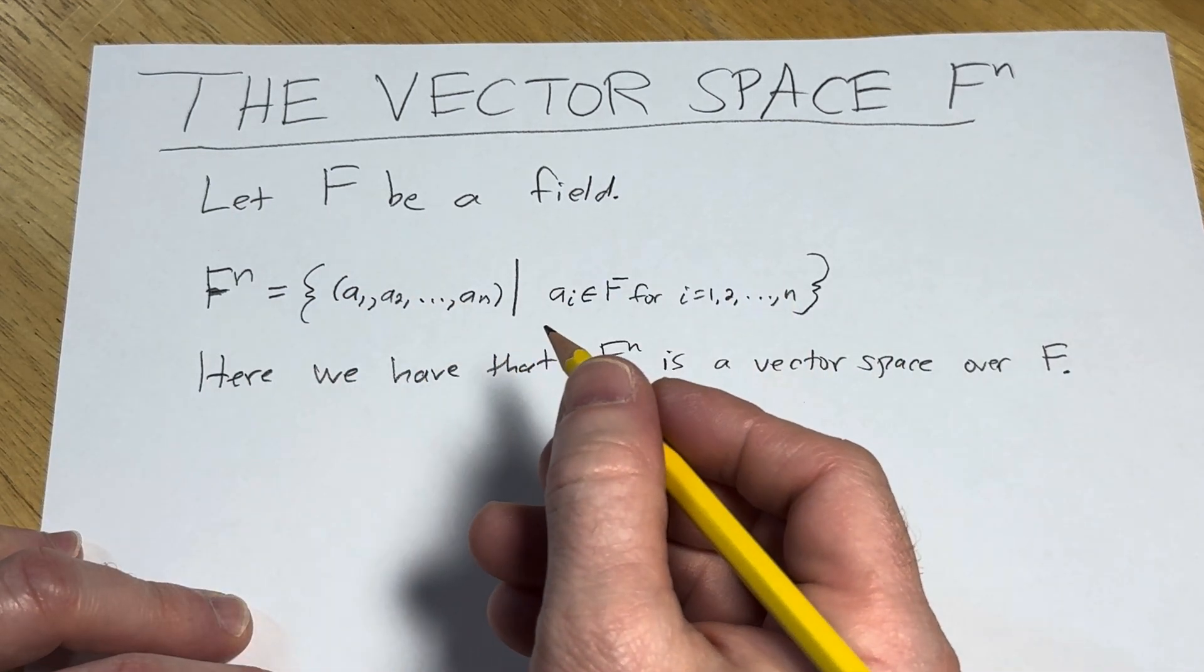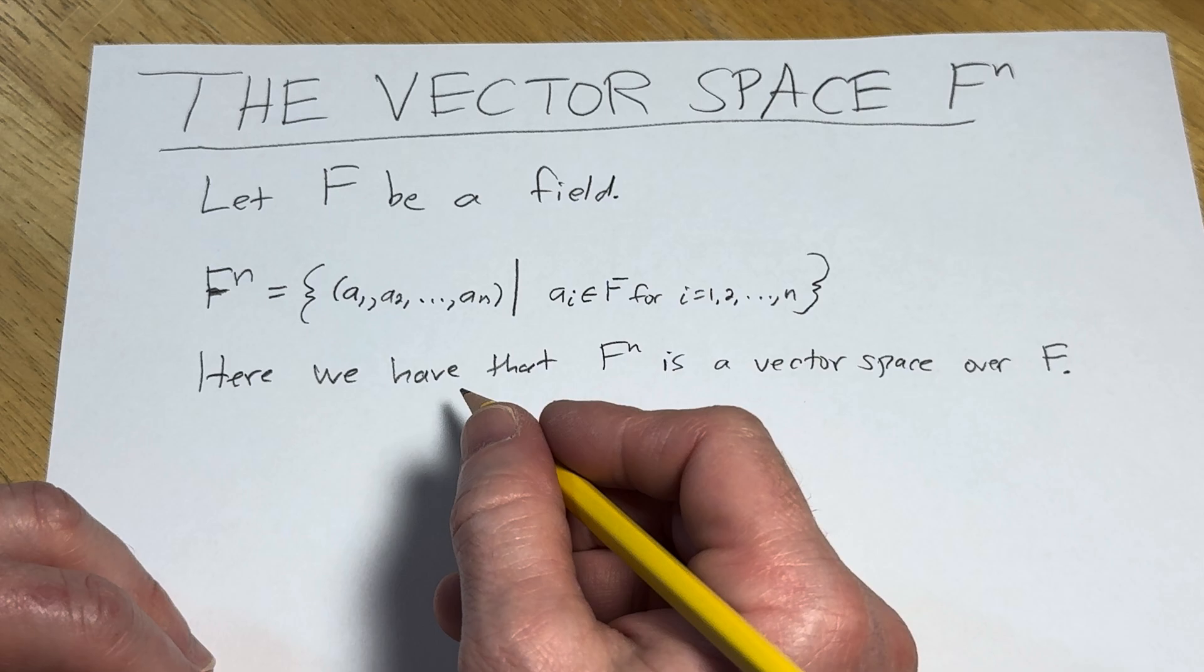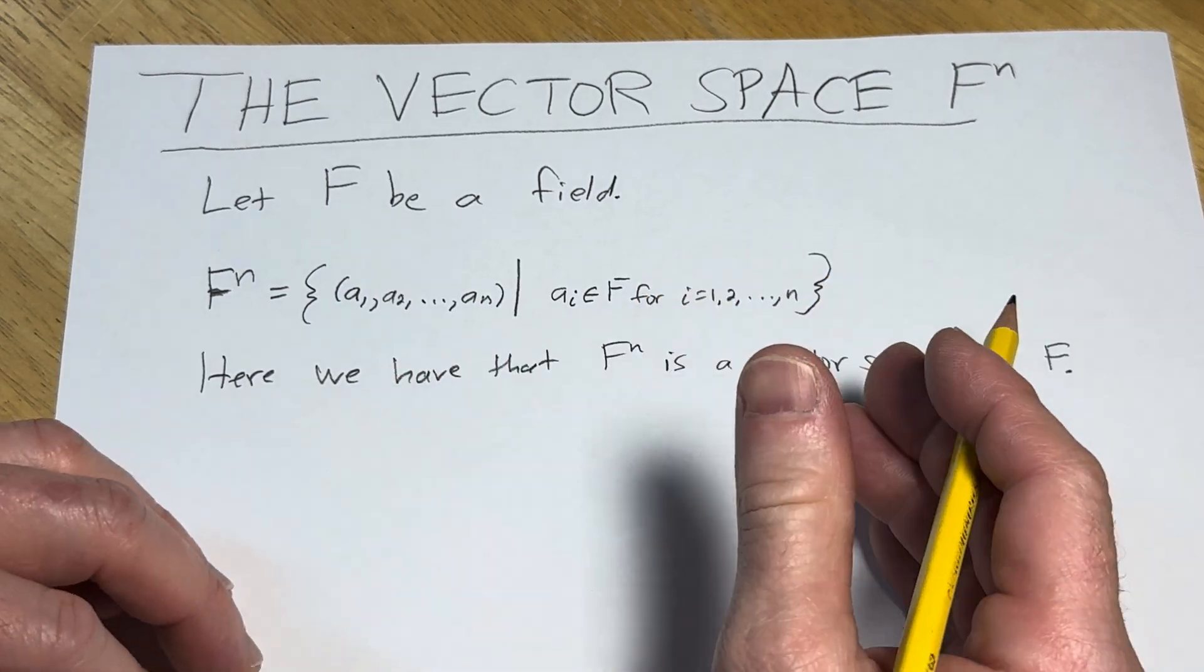And so we have two operations in a vector space, and of course we have the vector space axioms that have to be satisfied.